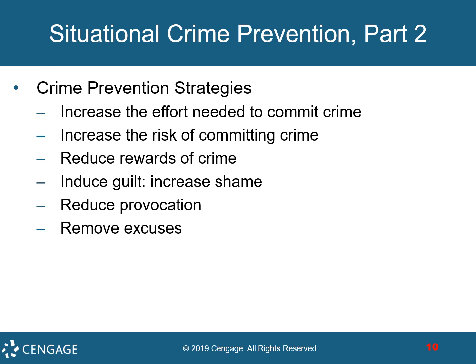Crime prevention strategies include: increasing the effort needed to commit crime — for example, putting unbreakable glass on storefronts; increasing the risk of committing crime through guardians, handlers, and managers, since a store is much less likely to be shoplifted the more personnel it has on the sales floor; reducing the rewards of crime, such as using indelible identification marks on bicycles; inducing guilt and increasing shame, such as publishing 'john lists' in the newspaper; reducing provocation, such as instituting earlier closing times in bars; and removing excuses, such as flashing speed indicators as cars pass.